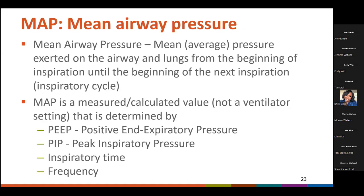Mean airway pressure is the mean or average pressure exerted on the airway and lungs from the beginning of inspiration until the beginning of the next inspiration. MAP is not a setting on a ventilator. It is a value that is calculated using the positive end expiratory pressure, or PEEP, the peak inspiratory pressure, or PIP, inspiratory time, and frequency.